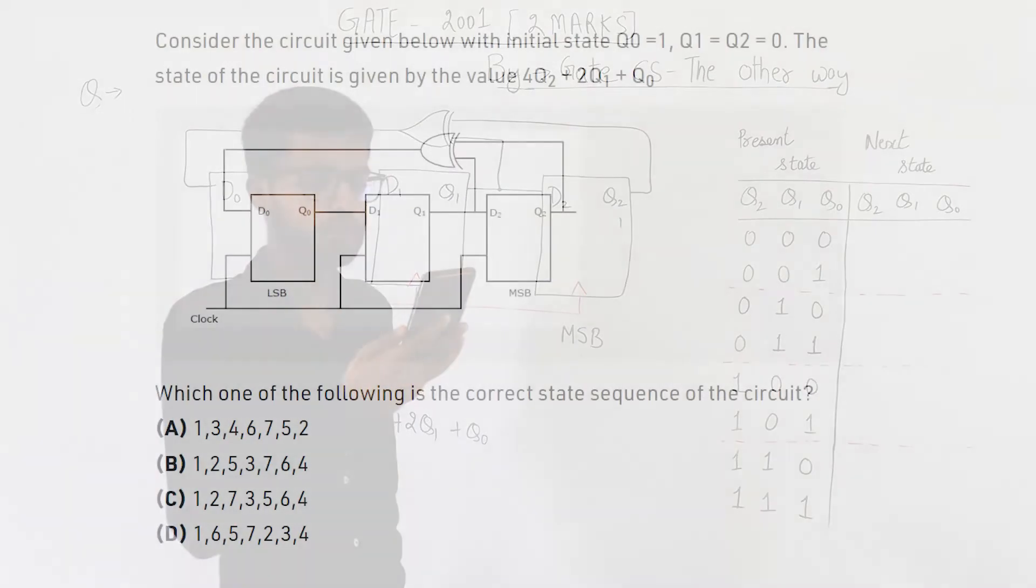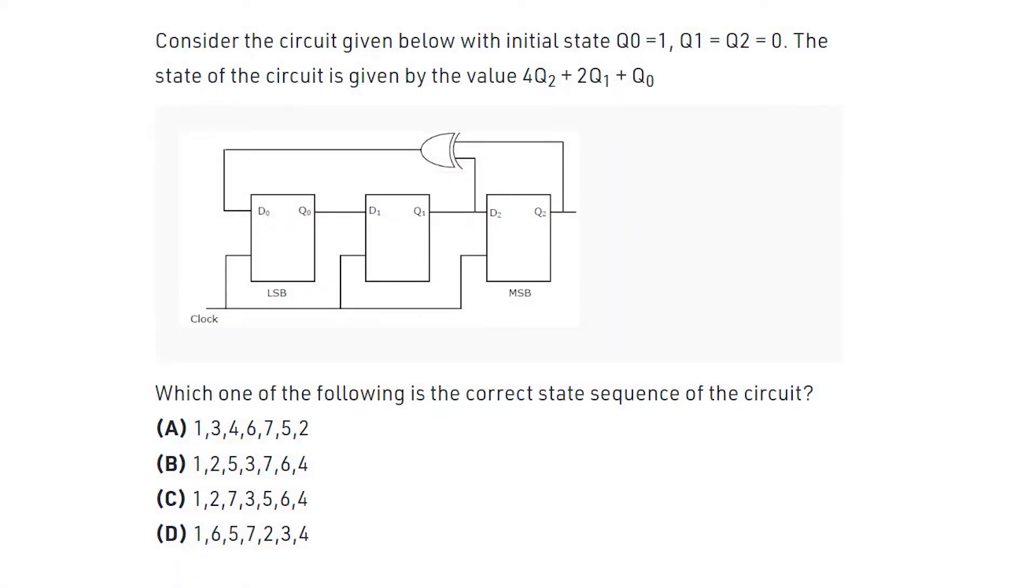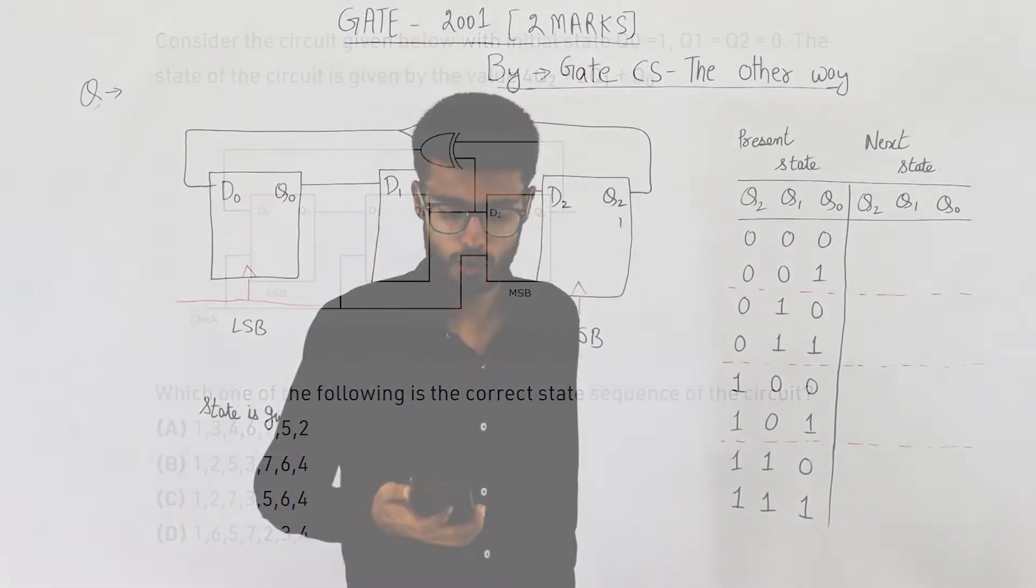Consider the circuit given below with initial state q0 equals 1, q1 and q2 equals 0. The state of circuit is given by the value 4q2 plus 2q1 plus q0. Which one of the following is the correct state sequence of the circuit? Just have a look at the given four options.